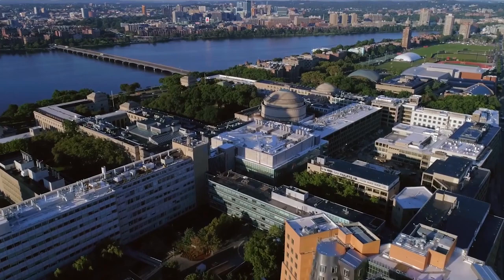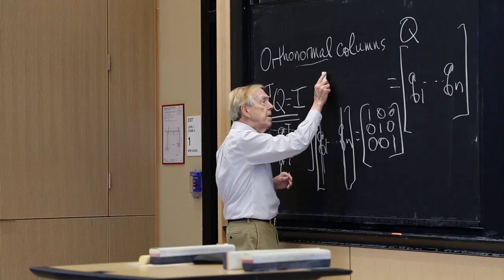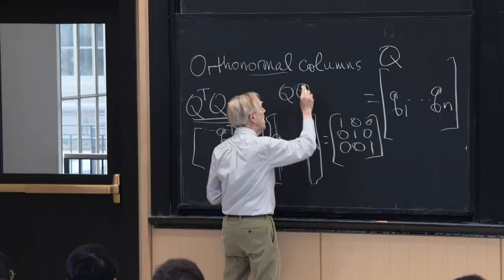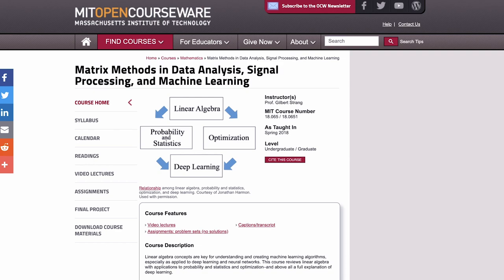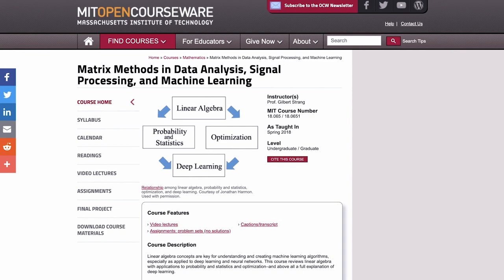OCW continues to build new courses every year. We now have more than 2,450 courses on the OpenCourseWare site. Many are innovative approaches to core subjects central to an MIT education, and many are also unique little gems. Gil Strang is a beloved teacher on OpenCourseWare — his courses have been visited more than 10 million times in total, and he now has a brand new course using matrix methods to teach signal processing, data analysis, and machine learning.